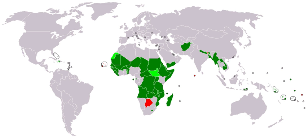Developing countries tend to have some characteristics in common. For example, with regards to health risks, they commonly have low levels of access to safe drinking water, sanitation and hygiene, energy poverty, high levels of pollution such as air pollution, indoor air pollution, water pollution, and a high proportion of people with tropical and infectious diseases and neglected tropical diseases.